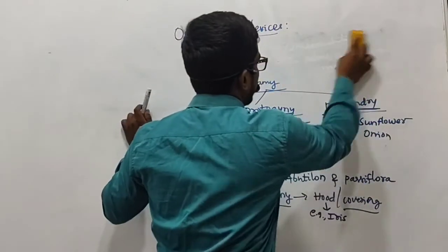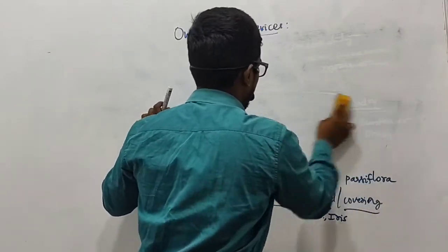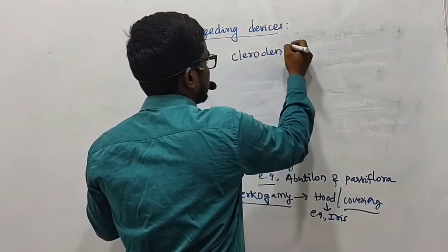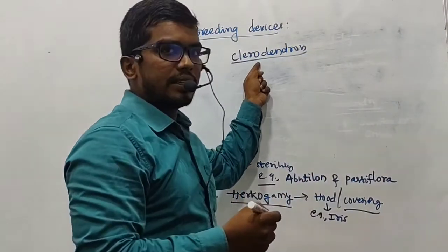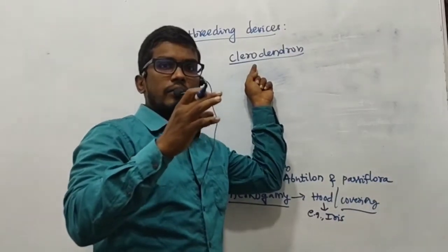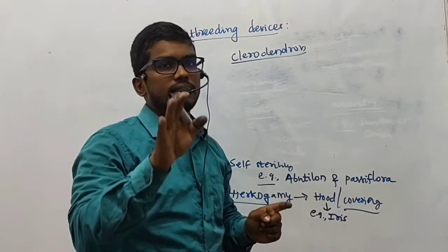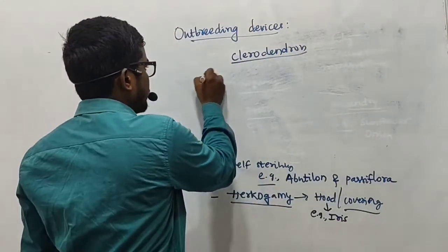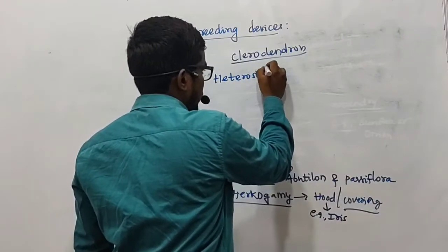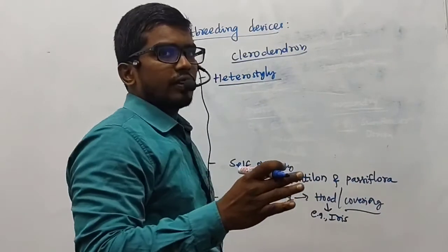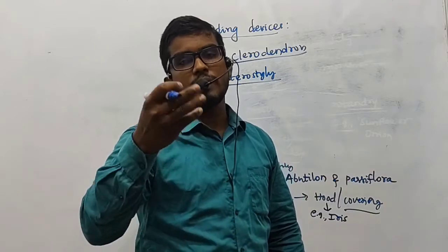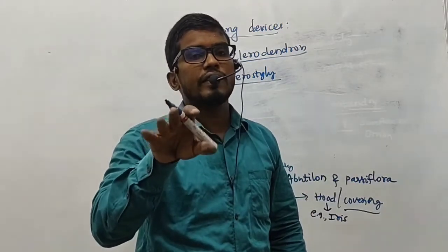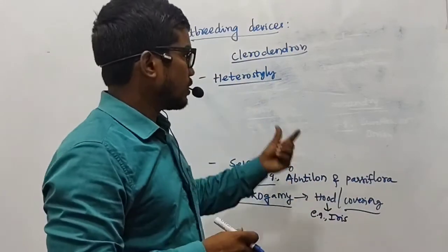Moving further, there are a few more important aspects of outbreeding devices. In the case of Clerodendron, the stamens and the style will move away from each other. When they move away from each other, they avoid self-pollination and contribute to cross-pollination. There is also one more important concept called heterostyly — different lengths of style and stamens. We may have long styles with short stamens, or long stamens with short styles, which results in cross-pollination while avoiding self-pollination.